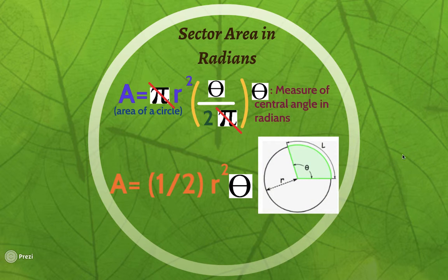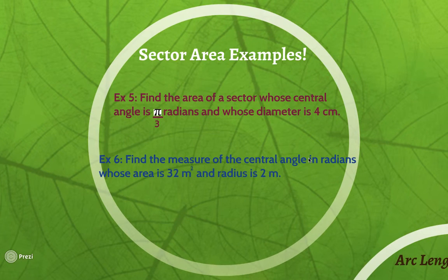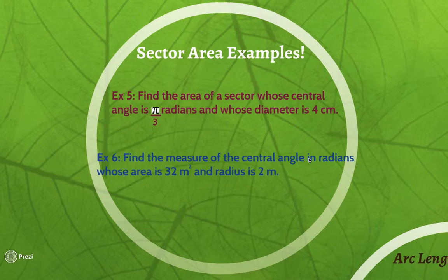So the sector area formula is A = ½r²θ, and that's what we're going to use to find the area of a sector. We'll use this formula in examples 5 and 6. Go ahead and pause the video and watch examples 5 and 6.